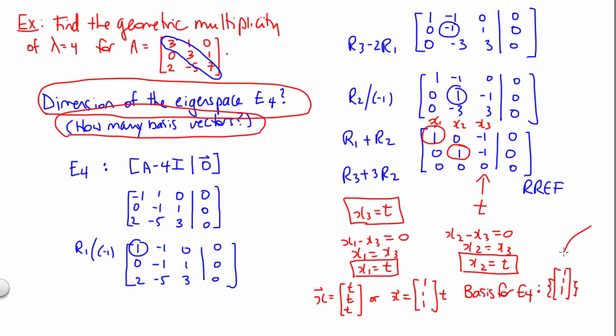Well, we can see now there's just a single basis vector in that eigenspace, so the answer is 1. The geometric multiplicity of lambda equal 4 is 1. Let's put a box around that. That is our final answer.